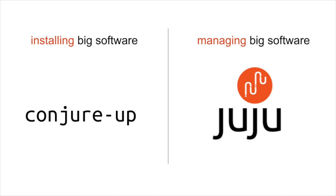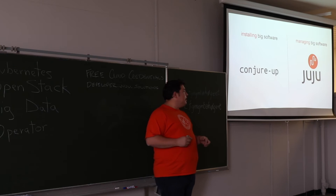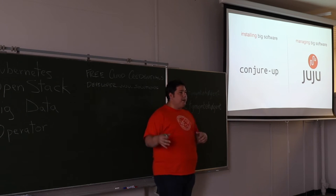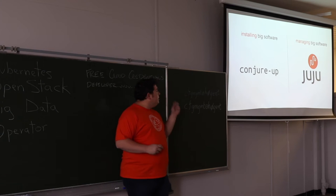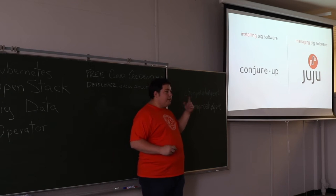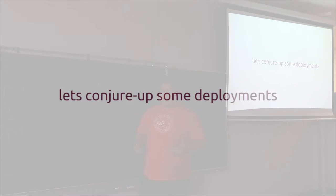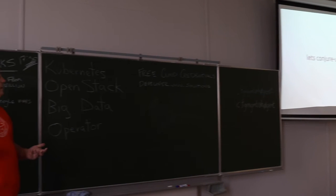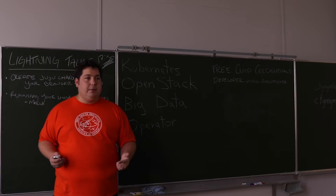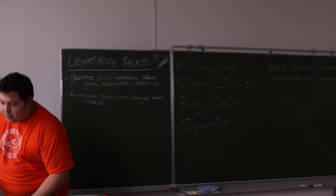Then, when it comes to actually managing the deployment — what happens after the first week, second week, third month, fourth month — we use Juju to drive, manipulate, and mutate that model over time. How do I install a new component? How do I change or configure things? These two tools feature heavily in these tracks and help solve a lot of these problems today. I'll walk through a couple of demos to give you an idea of what's possible.